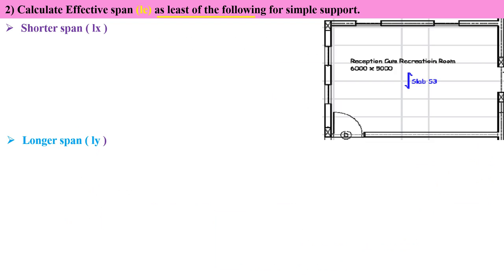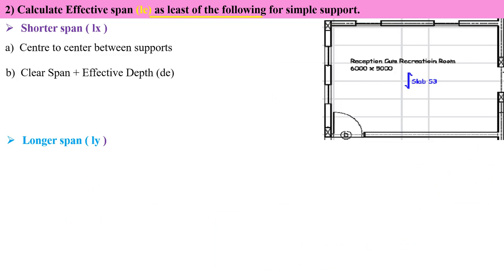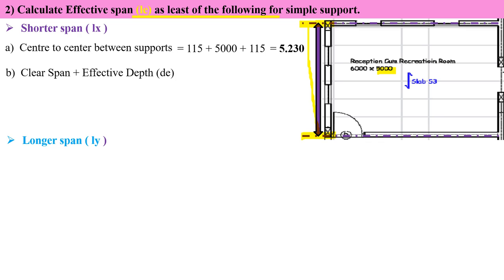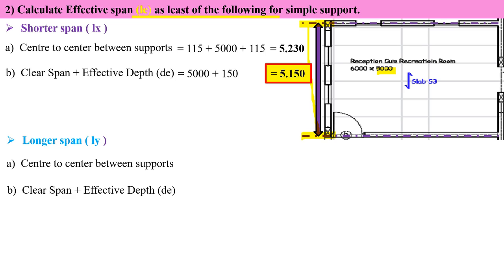Next, calculate the effective span LE — the lesser of two conditions. For the shorter span: Condition A (center-to-center between supports) = 115 + 5000 + 115 = 5230 mm = 5.230 m. Condition B (clear span + effective depth) = 5000 + 150 = 5150 mm = 5.150 m. The lesser value is 5.150 m.